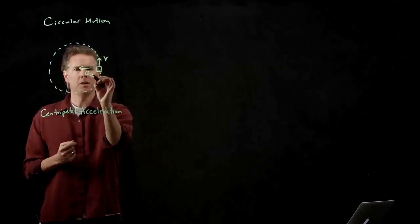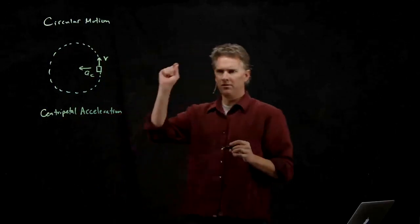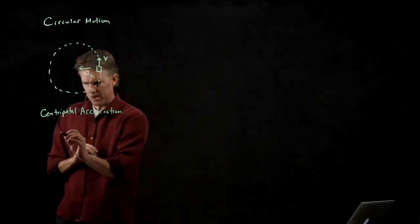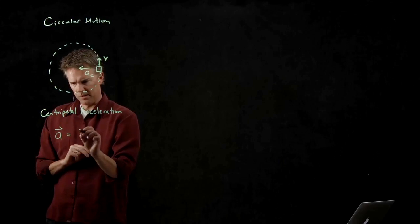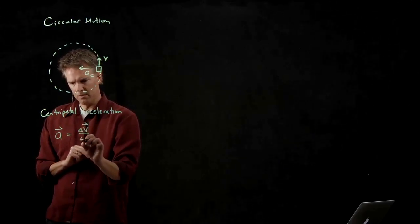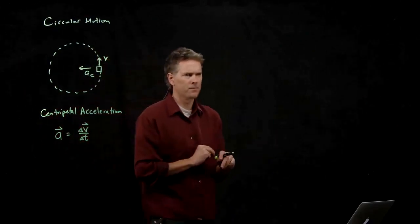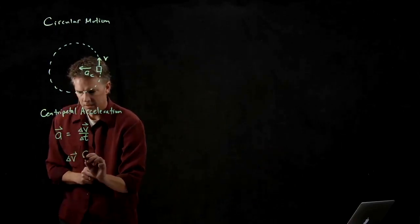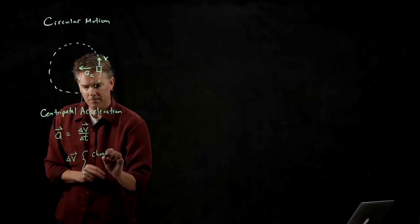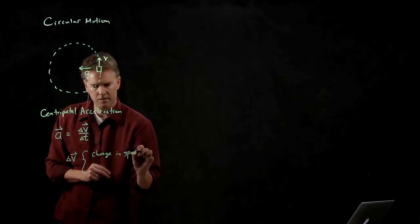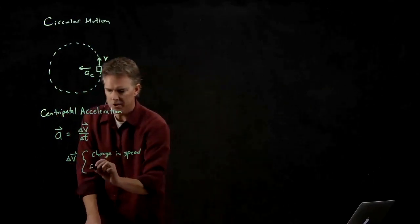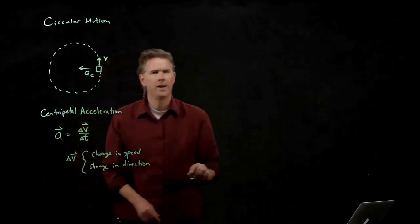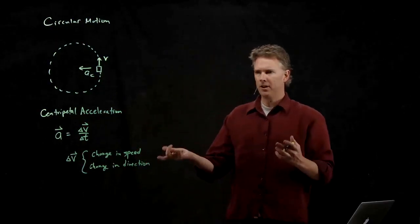We write it with an a sub c, and it's always towards the center of the circle. Remember, when we think about acceleration, acceleration is delta v over delta t. Delta v can be change in speed, or it can be change in direction. It doesn't have to be both, it can be one or the other. And if you have either of those, then you have an acceleration.